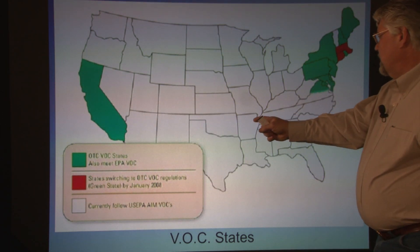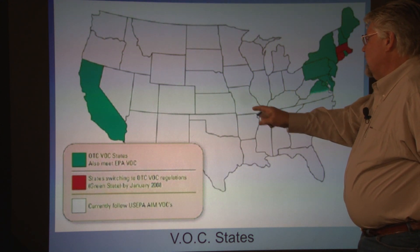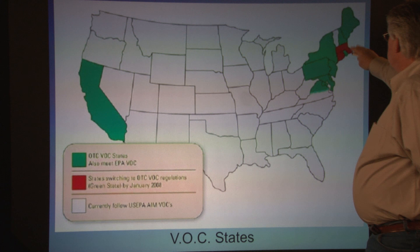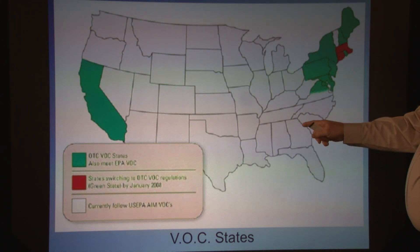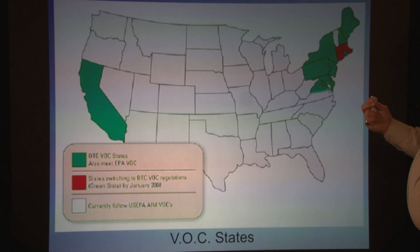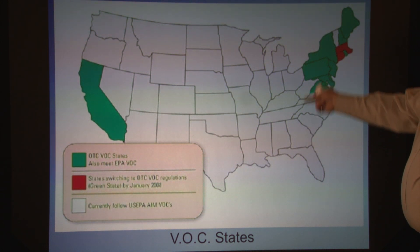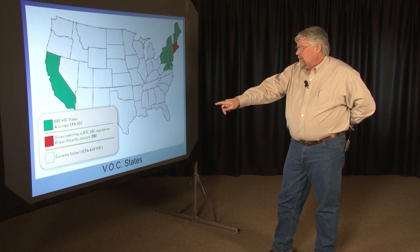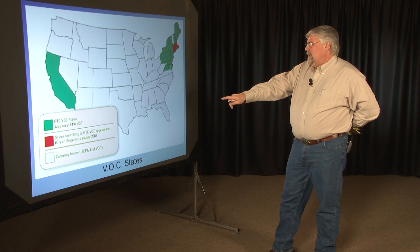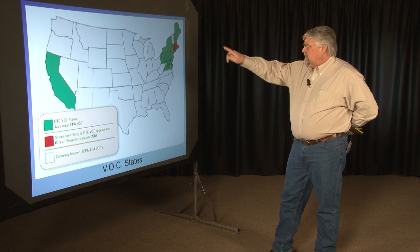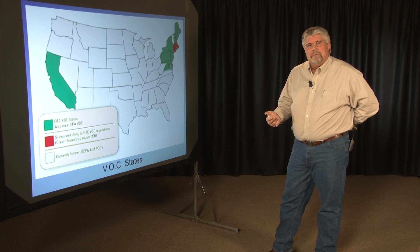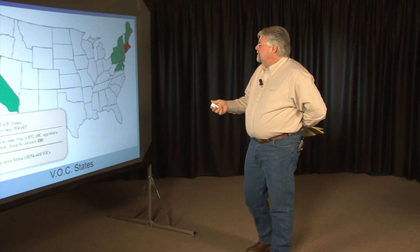This diagram shows VOC compliance with the EPA — some cities here, states here, and California. States are switching over to VOC regulations, and there are different regulations to monitor this because it's become such a problem. In the white areas, most states currently follow US EPA AIM VOC standards. So most everybody is on board — it's become a nationwide problem in buildings and commercial properties, and it's definitely something you may run into in your inspections.